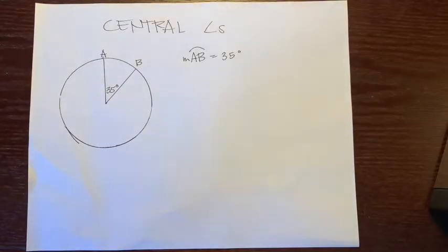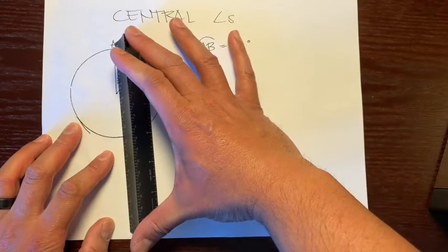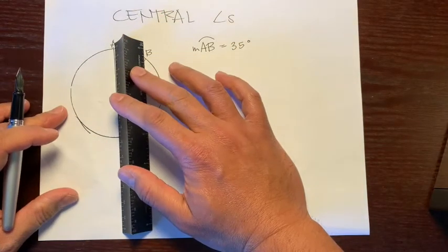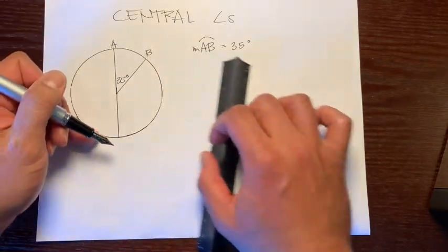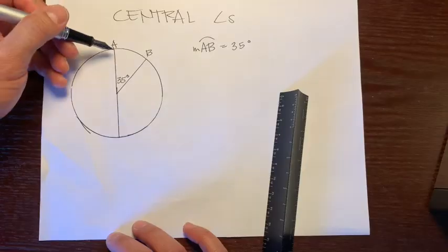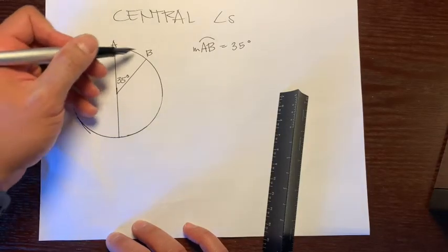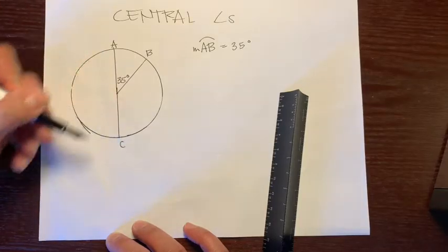Another question that might show up in class is, let's say instead of a radius, let's extend this radius to make a diameter. So what does the diameter do? It cuts the circle in half. If you remember, a circle is 360 degrees, and let's label this point C.